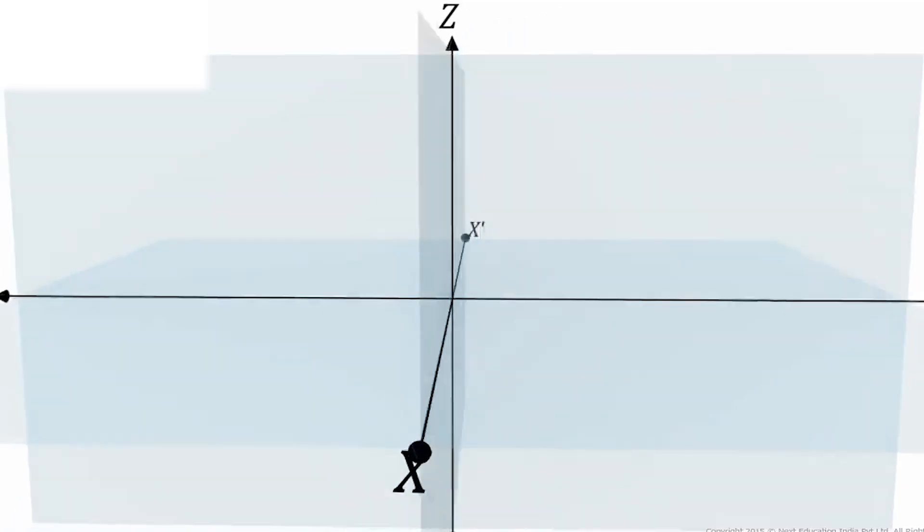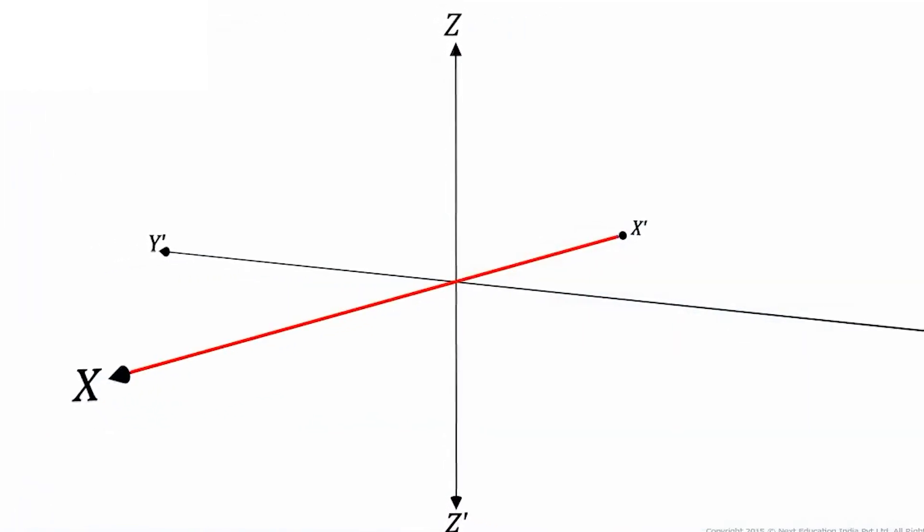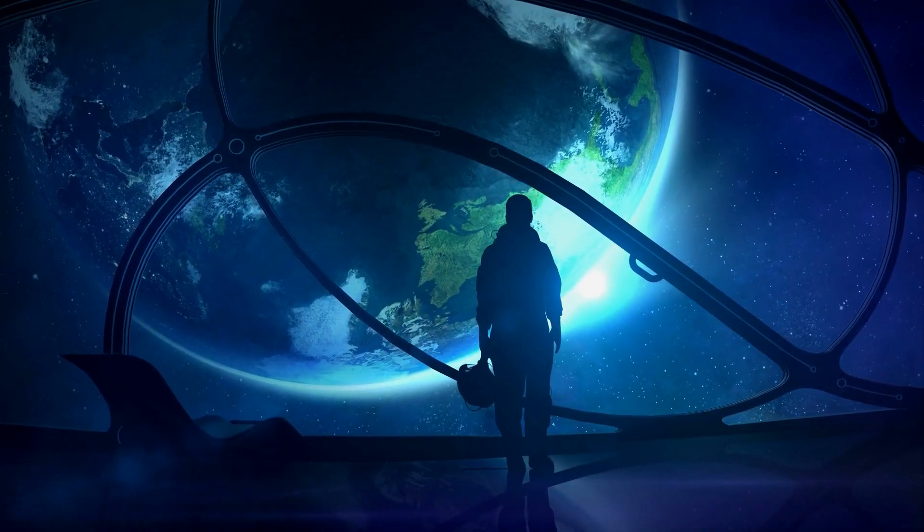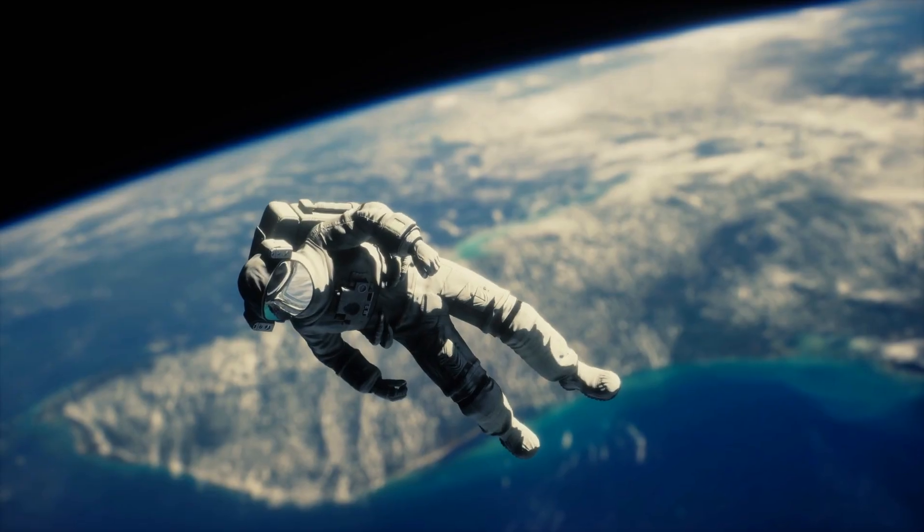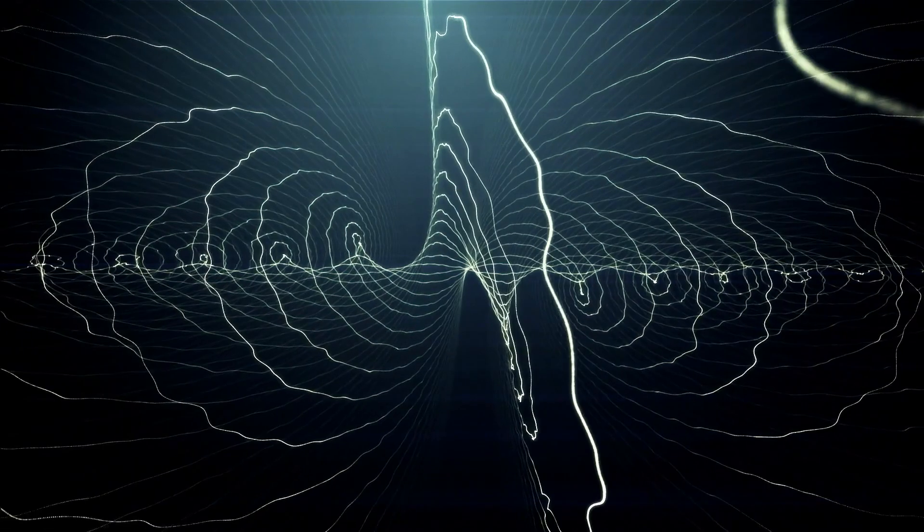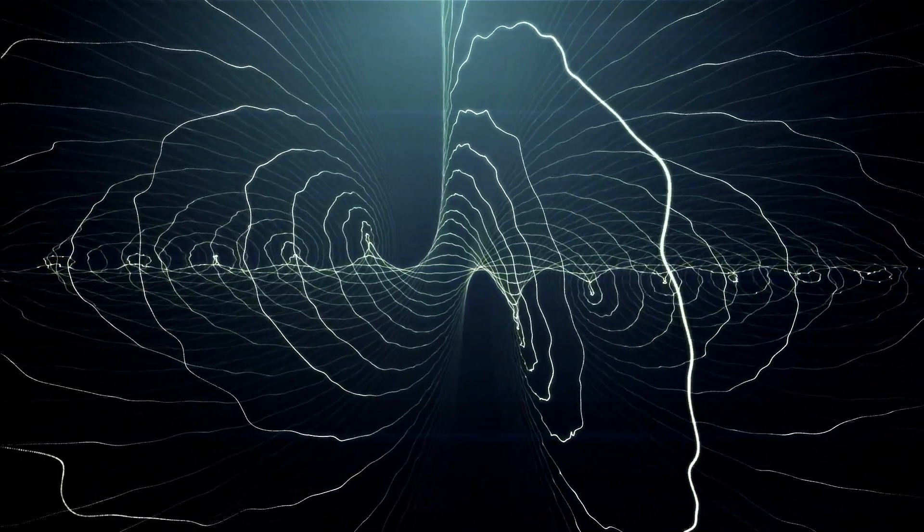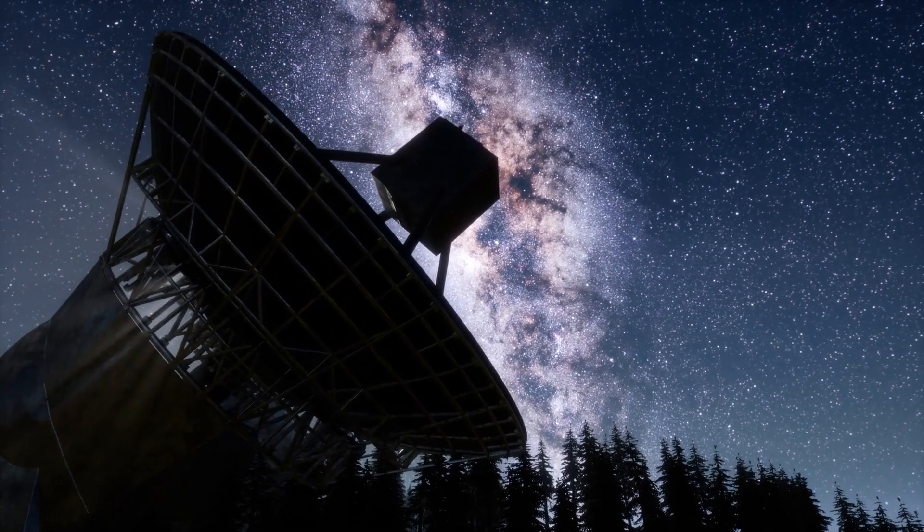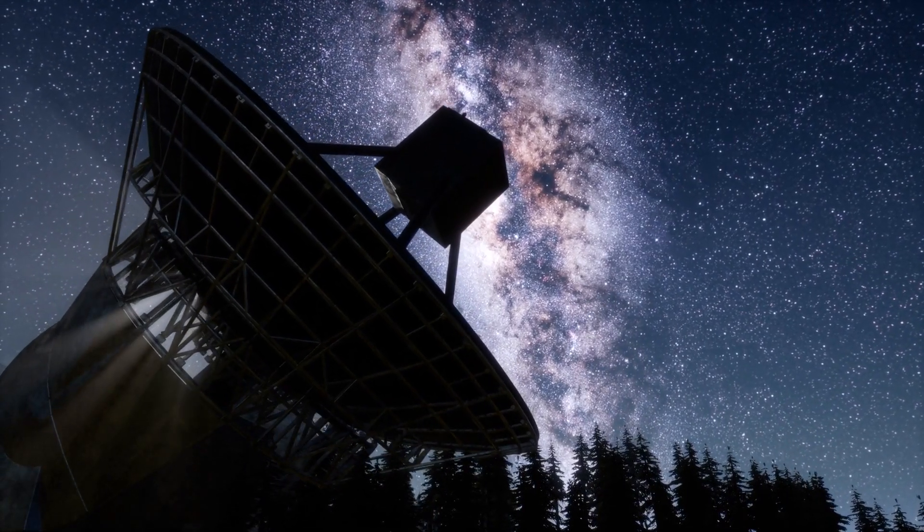This is the idea that there are extra, and yet undiscovered dimensions to space. Additional hidden directions beyond up, down, and across X, Y, and Z. Directions we have never yet been able to perceive. But what would this mean? Where would such dimensions exist? And what would they look like? And how would we ever be able to detect them?